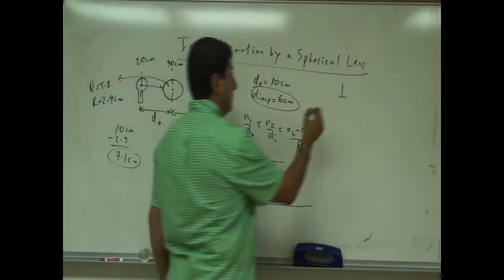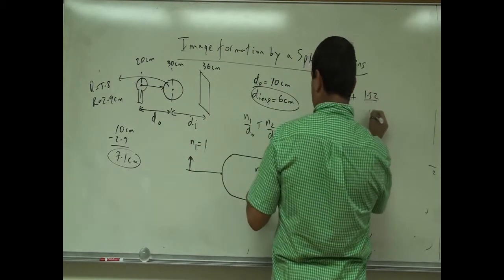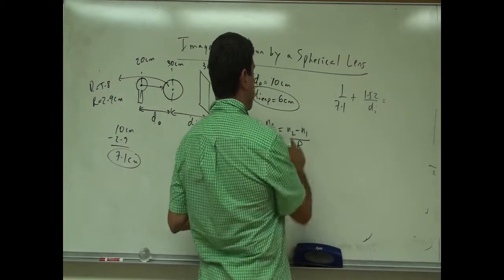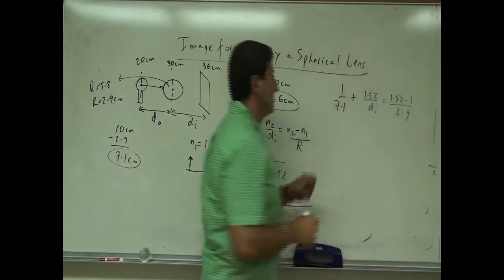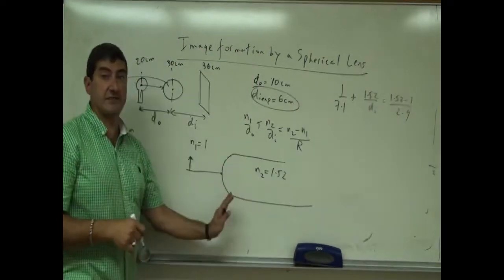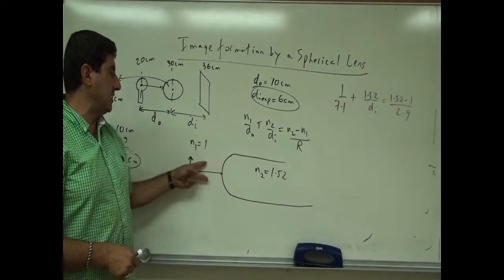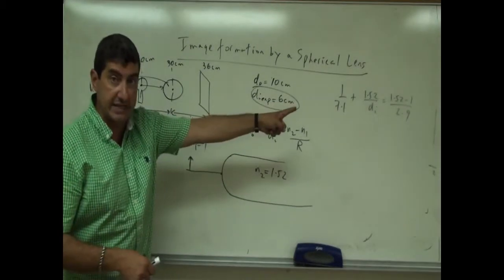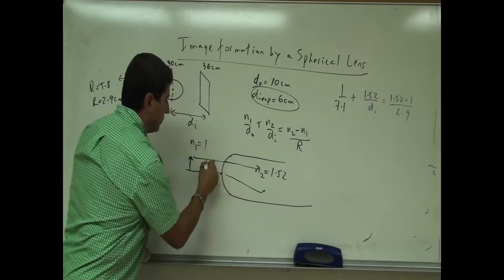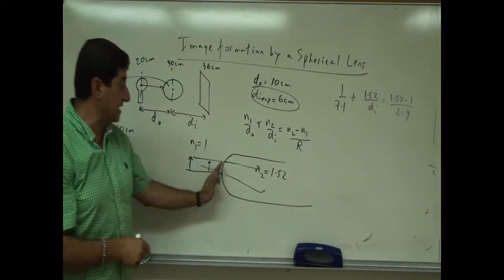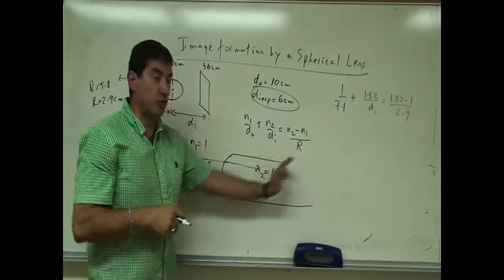So: 1/7.1 + 1.52/DI = (1.52 − 1)/2.9. Now I calculate where the expected image is from the front side of the lens. It might be in the lens — a real image — or it might form a virtual image on the left side of the lens. If DI is negative, the light rays were not able to bend in time and formed a virtual image. If DI is positive, it formed an image inside the glass, which we're assuming goes forever.